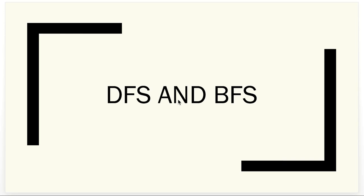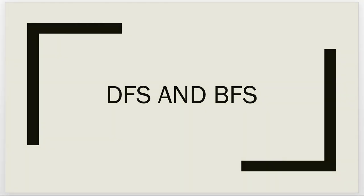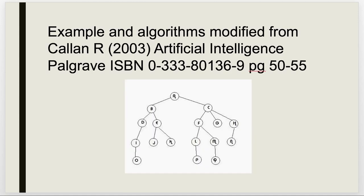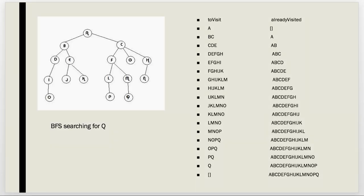We're going to talk through depth-first and breadth-first search today. We have a tree structure and we're going to search it to find Q. In both breadth-first and depth-first, we have two structures: a list of nodes to visit and a list of already visited nodes. The first thing we do is put the root node A on our to-be-visited list.